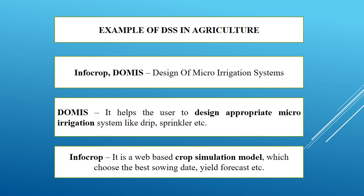DSS are also used in Agriculture. Examples include Infocrop and DOMIS. DOMIS stands for Design of Micro-Irrigation System. This software helps the user to design an appropriate micro-irrigation system such as drip or sprinkler irrigation. InfoCrop is also a DSS — it is a web-based crop simulation model.